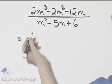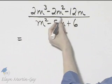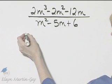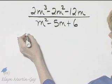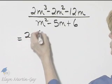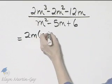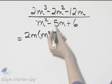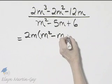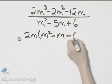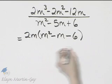Let's look in the numerator. What's the first step to factoring? It's to factor out a common factor if there is one, and there is a common factor of 2m. If I factor that out, I'm left with m squared minus m minus 6. Double check by multiplying.